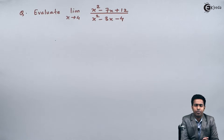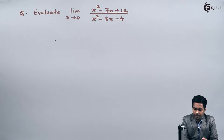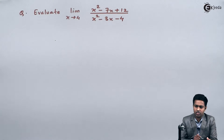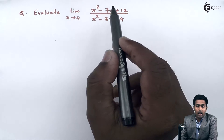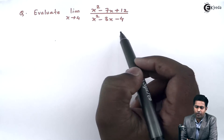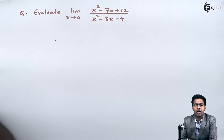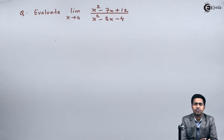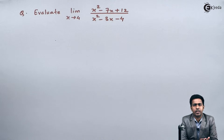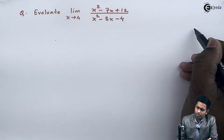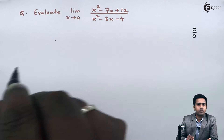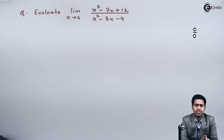Before solving this problem, if you observe the question you can see that an algebraic function is given. Whenever we have an algebraic function, we always start with the direct method. If the direct method fails — meaning it gives an indeterminate form of 0/0 — then we apply other methods.